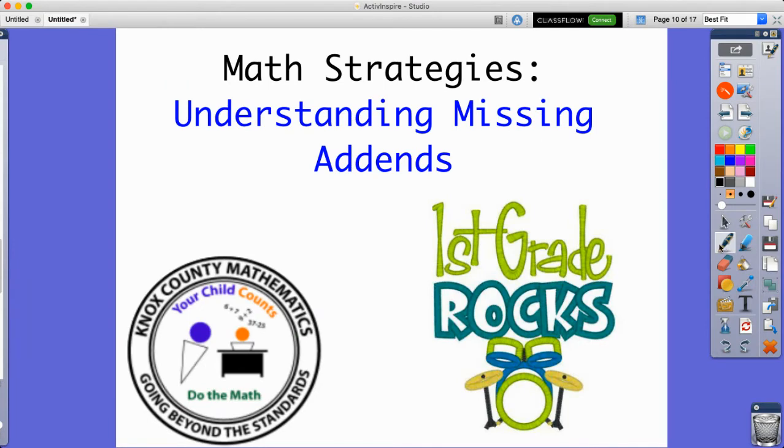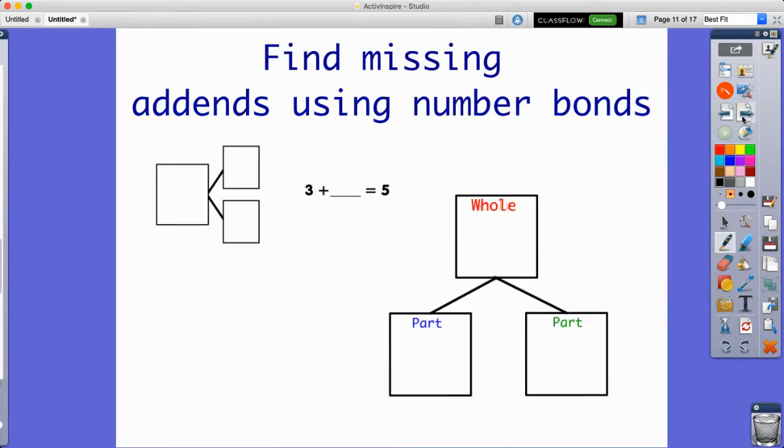Today's math strategy video is about understanding missing addends. Let's look at our first example. We're talking about finding missing addends using number bonds. You're going to see this type of number bond in your math workbook.